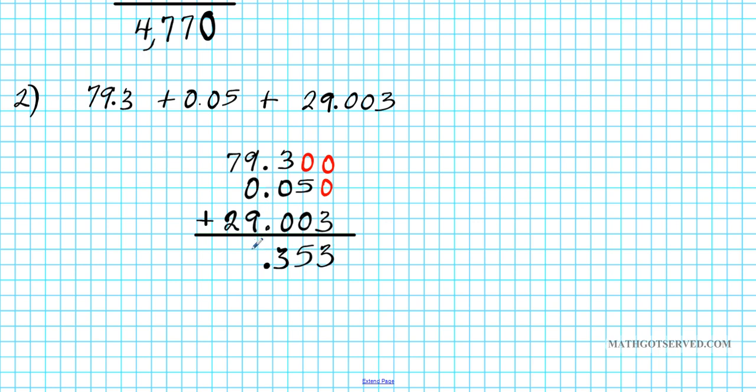Now let's go to the ones place. 9 + 9 gives us 18. So we have to regroup here. Put down 8, carry 1.